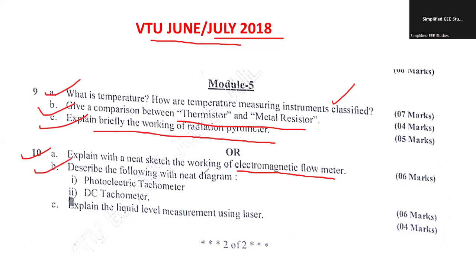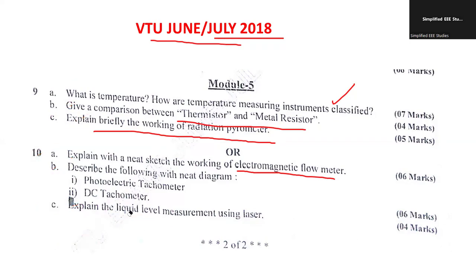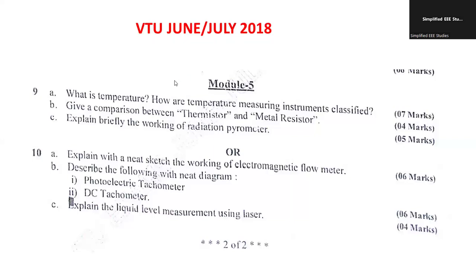Describe the following with a neat diagram: photoelectric tachometer and DC tachometer — how do you measure the speed? Then, explain the liquid level measurement by using laser. You have to explain what a laser is and how you are going to measure the liquid level using this technique. Try to add some schematic diagram along with your explanation, as that carries more weightage and can convince the examiner in a better manner.